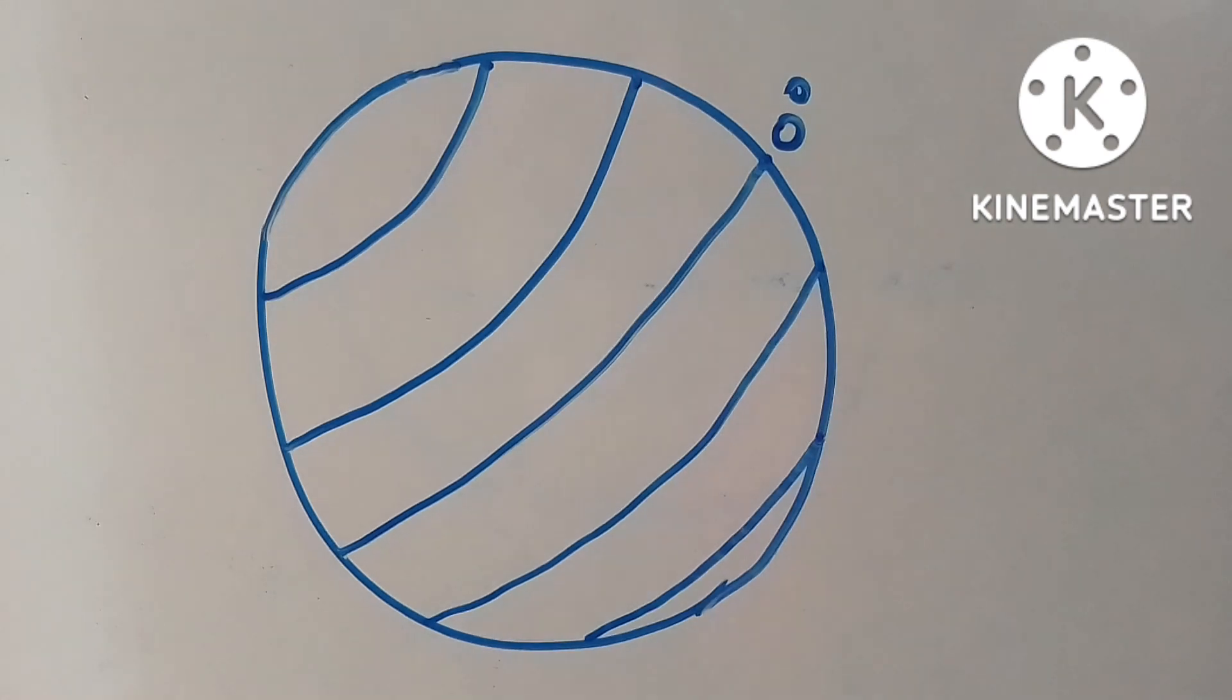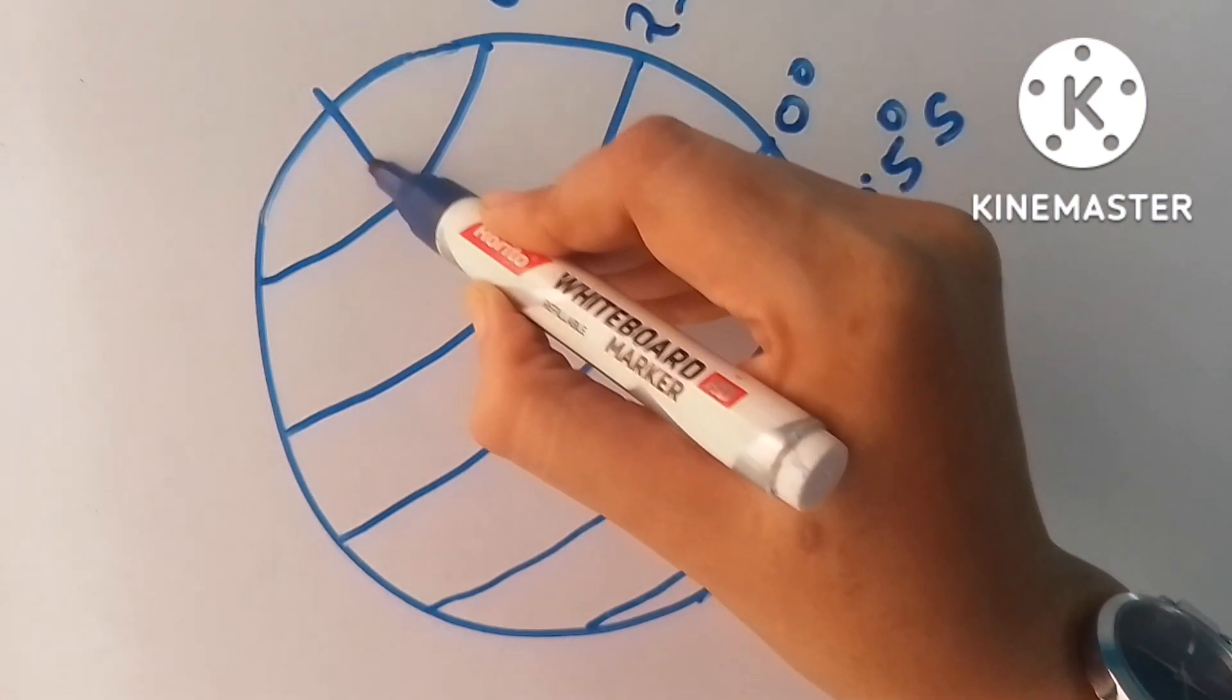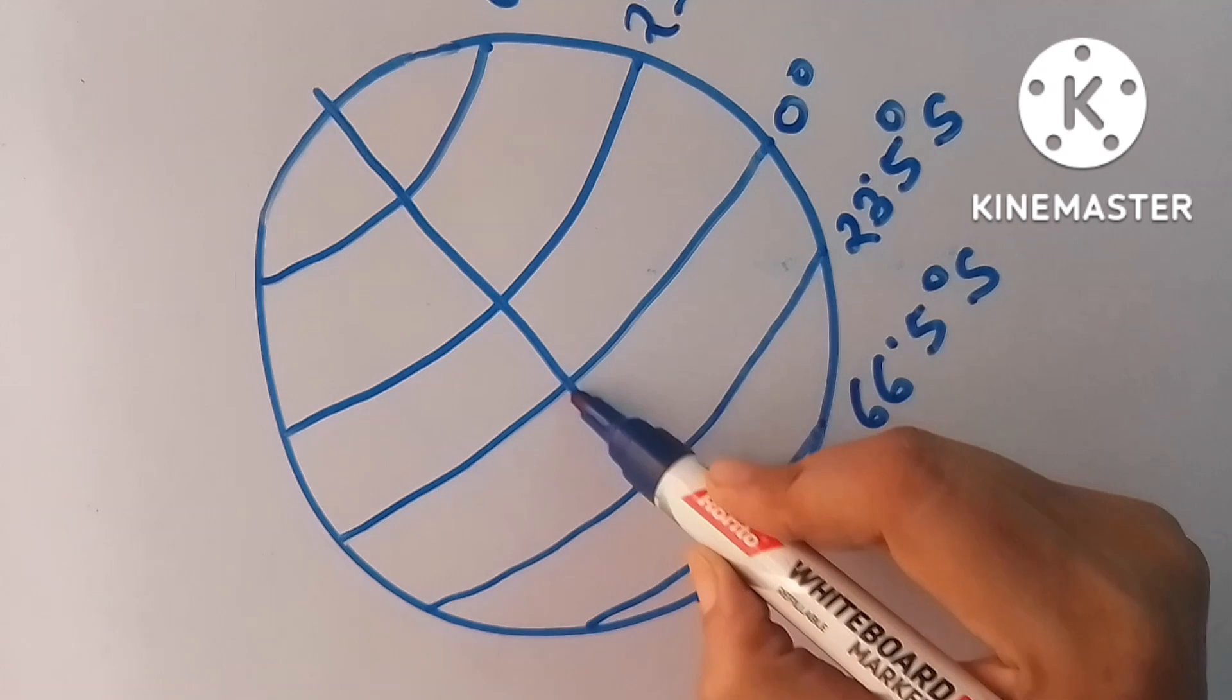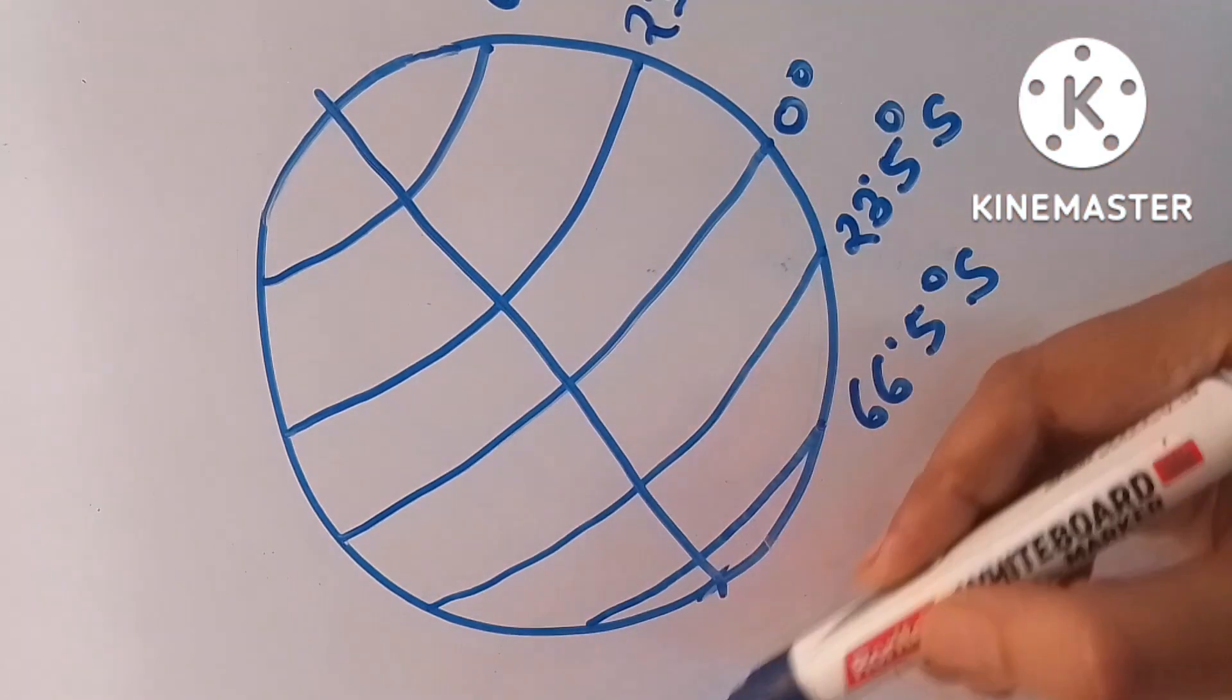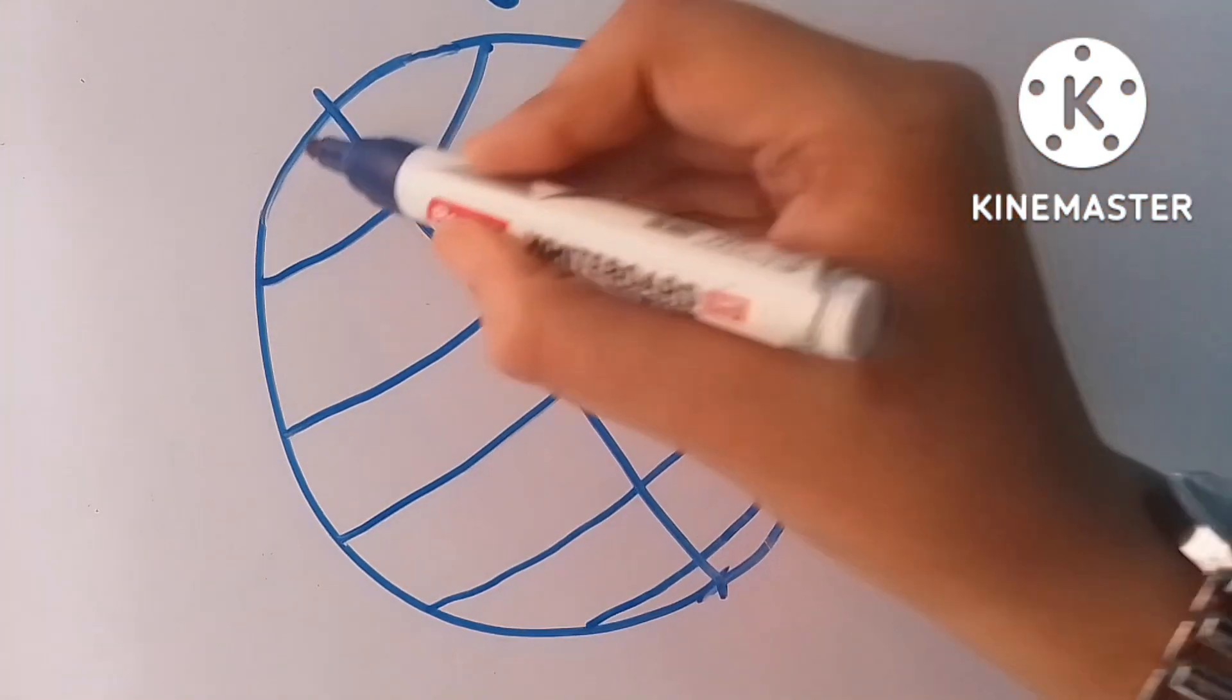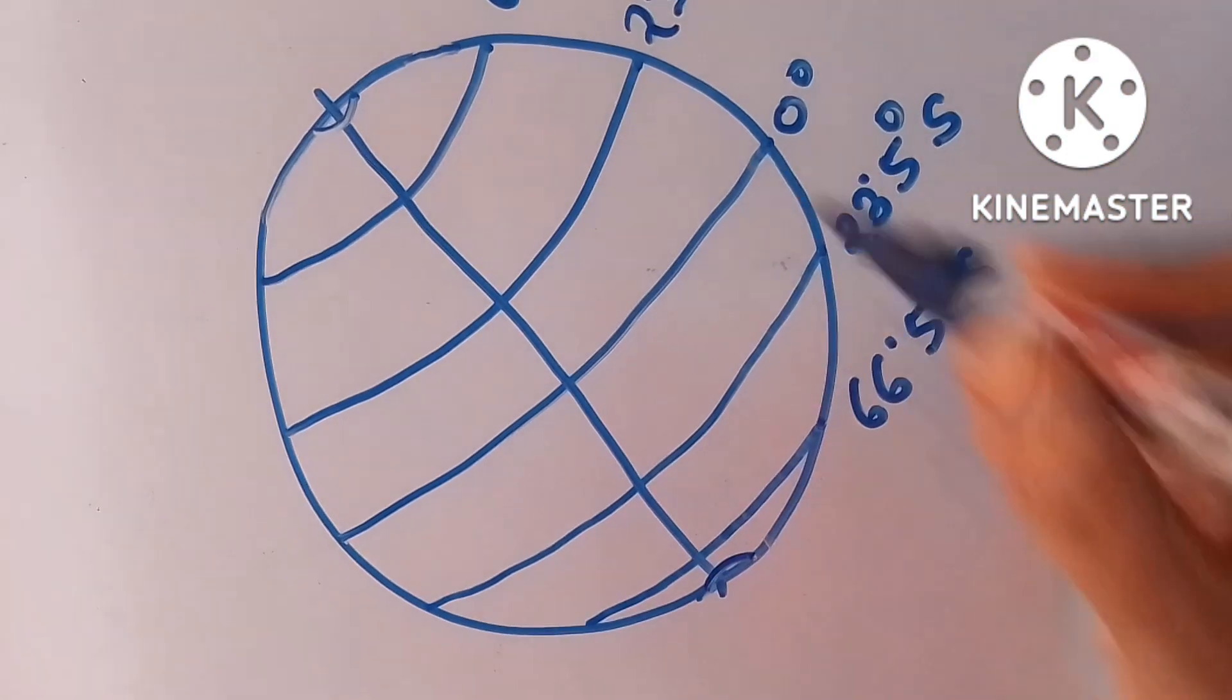Next I am showing the two main longitudes. The first main longitude is prime meridian that is longitude zero degree Greenwich meridian and just its opposite is situated international date line longitude 180 degree.